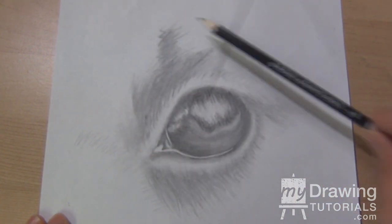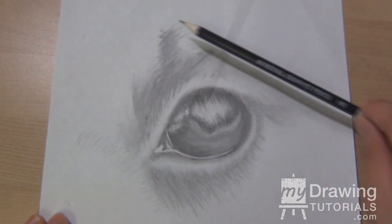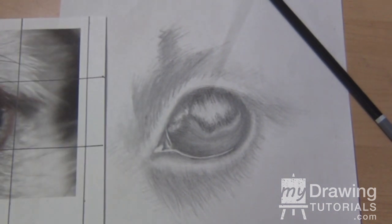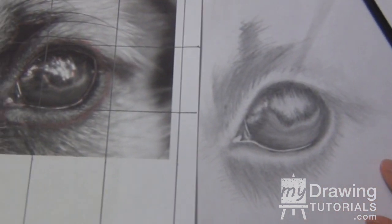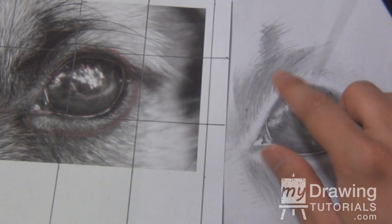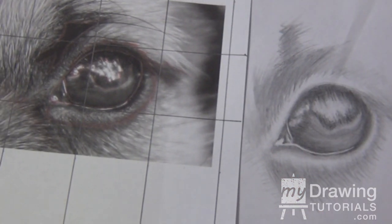So let's begin by working on this area right here. We'll refine this part that we put in in the previous video. First what I'm going to do is shape this block of fur to match what I see in the reference.